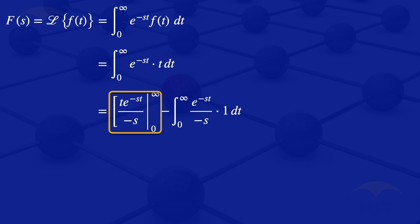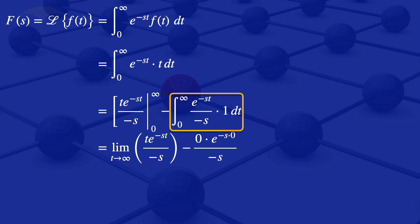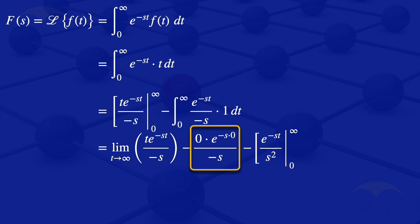Substituting the limits for the first part — upper limit infinity and lower limit 0 — we get the limit as t approaches infinity of t · e^(-st) / (-s), minus the lower limit term: 0 · e^(-s·0) / (-s). Since we are multiplying by 0 in the numerator for the lower limit, that term gives us 0. The remaining integral with respect to t gives us e^(-st) / s².